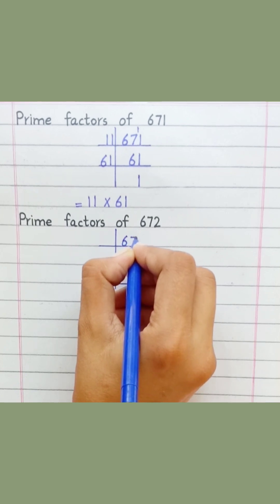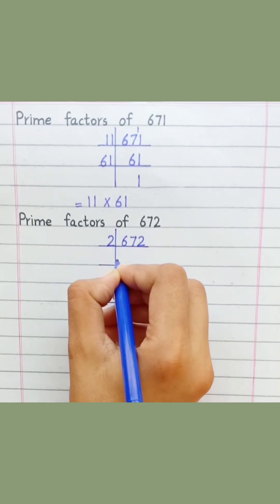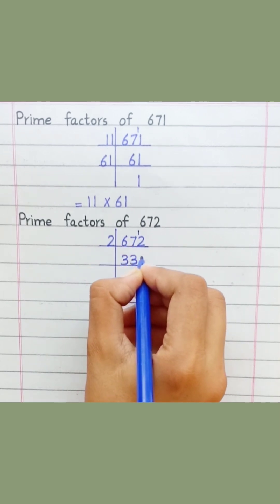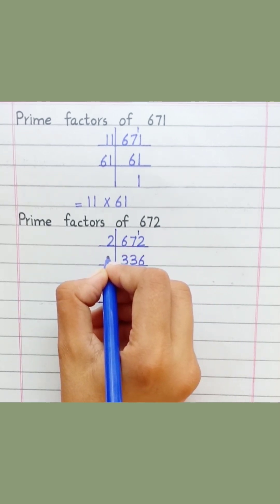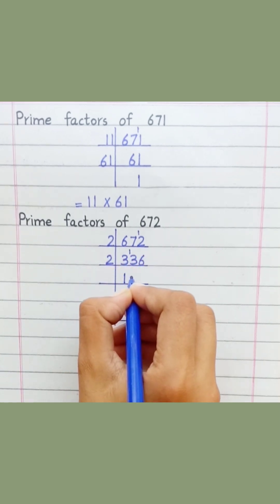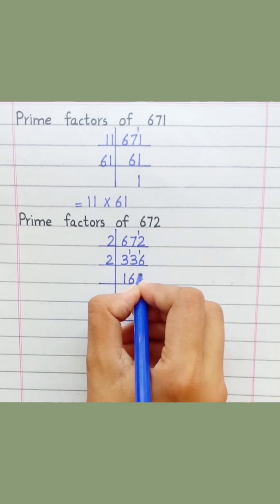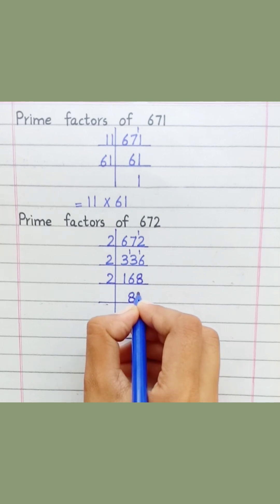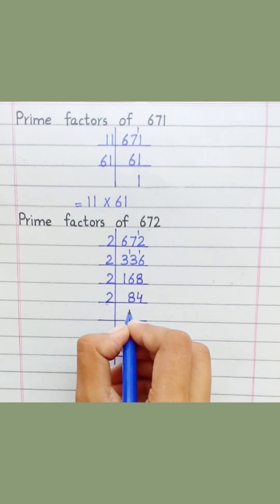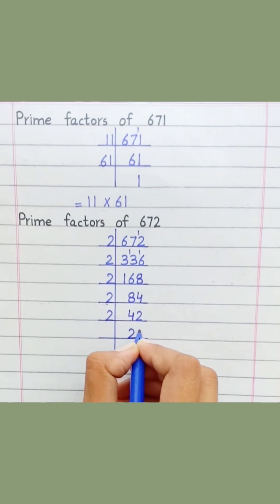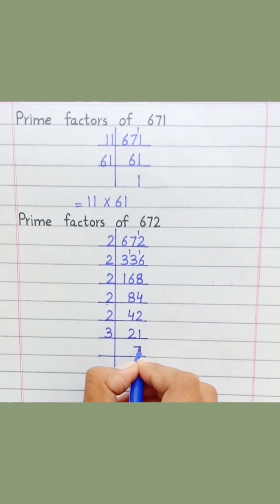Prime factors of 672. 2 times 3 is 6, 2 times 6 is 12, 2 times 1 is 2, 2 times 6 is 12, 2 times 8 is 16, 2 times 4 is 8, 2 times 2 is 4, 2 times 1 is 2. 3 times 7 is 21, 7 times 1 is 7.